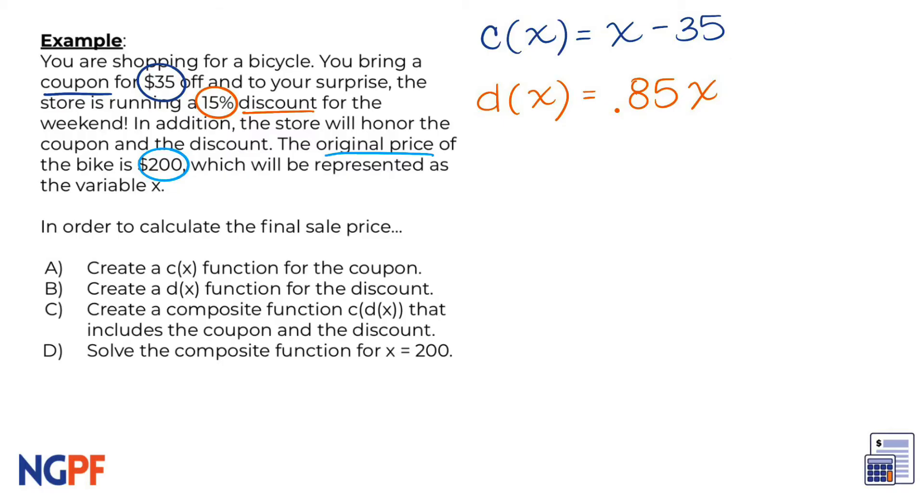Now that we have set up our two functions for our coupon and discount prices we can now apply both of the sales by creating a composite function c(d(x)). According to this scenario which is applied first, the coupon or the discount?